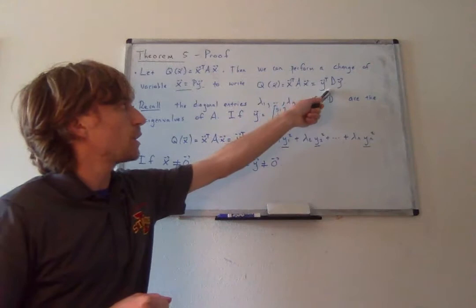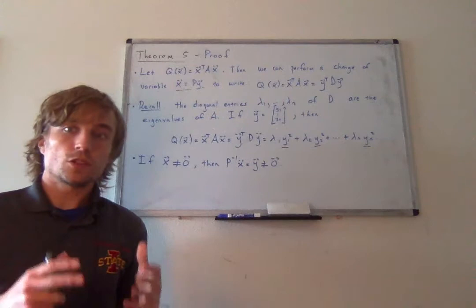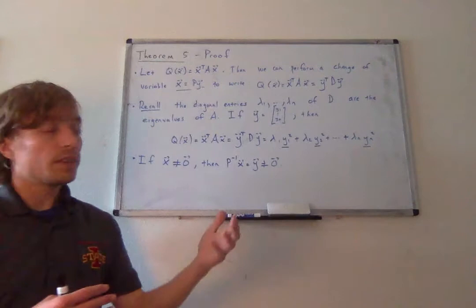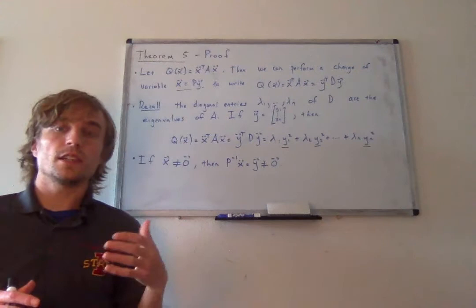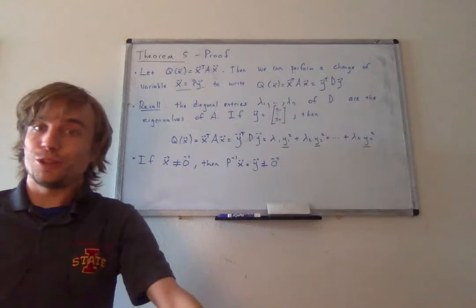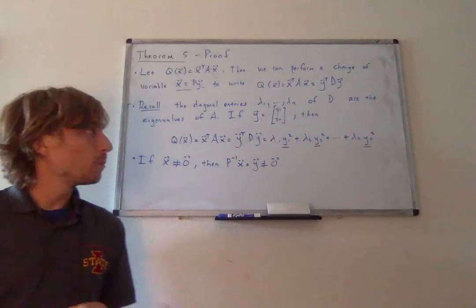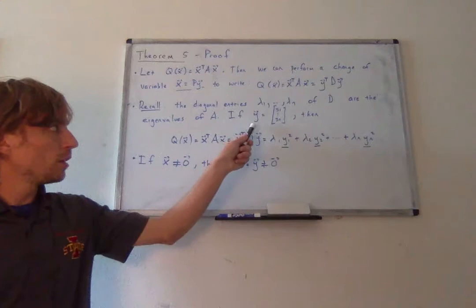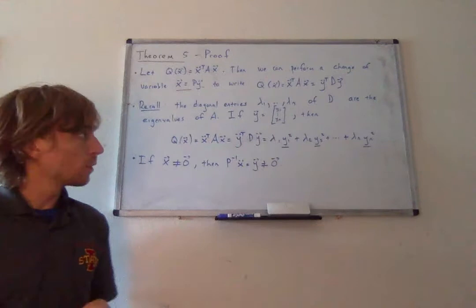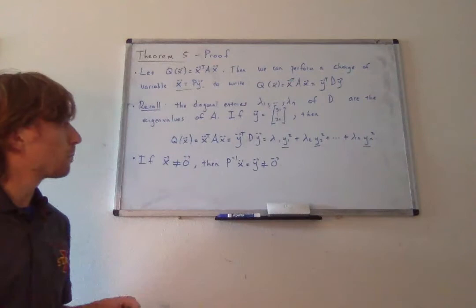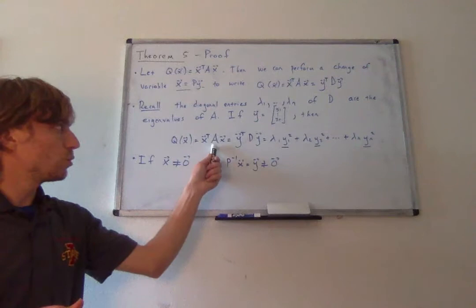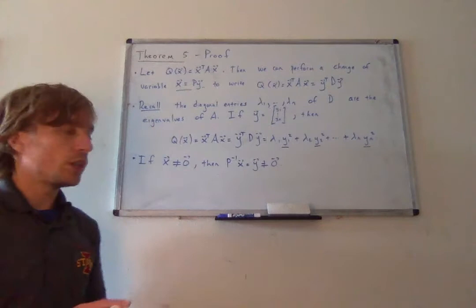After the change of variable, we can rewrite Q of X as Y transpose D times Y. The matrix D is similar to A — we find D by orthogonally diagonalizing A using matrix P, where P is the orthogonal matrix consisting of the eigenvectors of A. The diagonal entries of D, which I label lambda 1 through lambda n, are the eigenvalues of A. If Y is the vector of variables Y1 through Yn, I can expand the entire quadratic form Q of X.